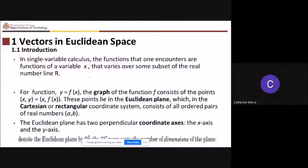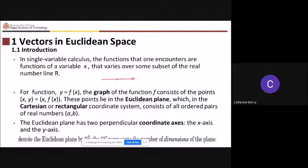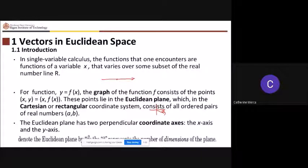For a single variable you have your number line, and from the origin you can have a position vector — we call it a position vector if it starts from the origin. For a two-dimensional coordinate system, the Euclidean plane or Cartesian coordinate system, you have a vector such as position vector u. For 3D, you have vector v.